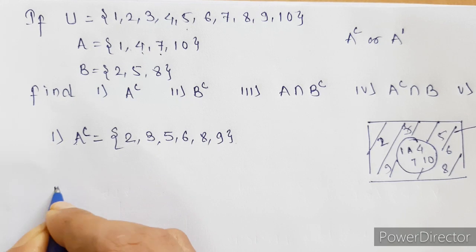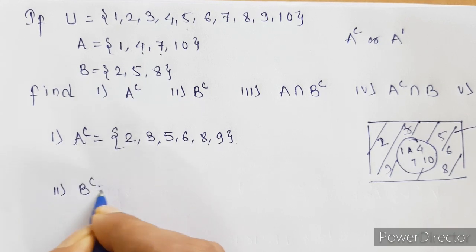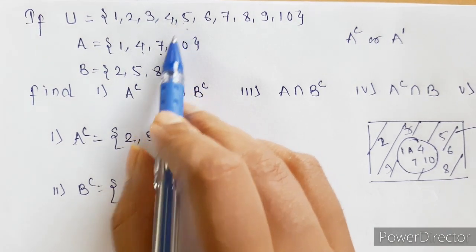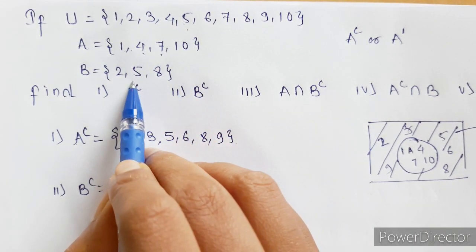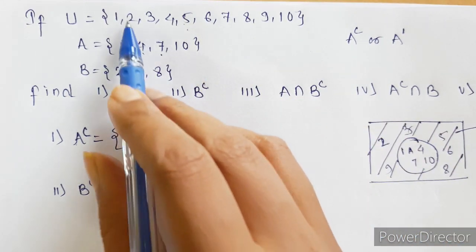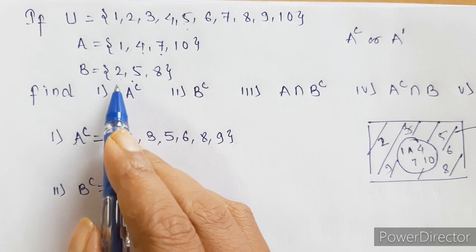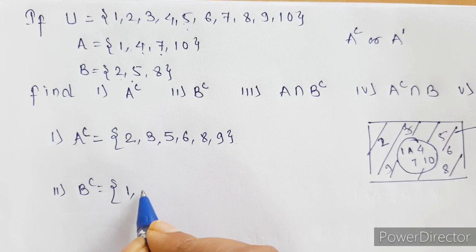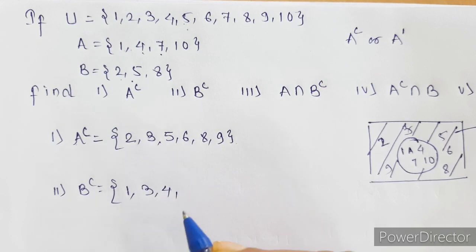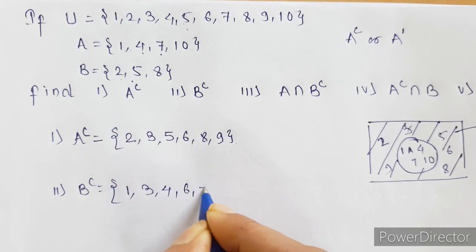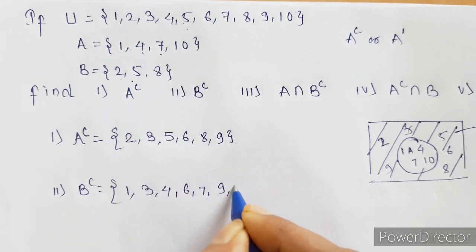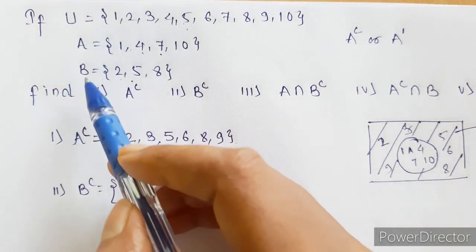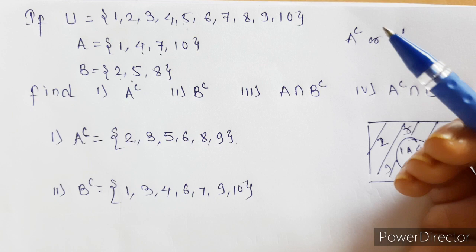Next, B complement. Similarly, we have to find B complement — the elements which are in U but which are not in B. 1 is not in B, so 1 comes in B complement. 2 is in B, so 2 is not going to come in B complement. Then 3, 4. 5 is in B. Then 6, 7. 8 is in B. Then 9 and 10. B complement is nothing but the elements other than those in B.